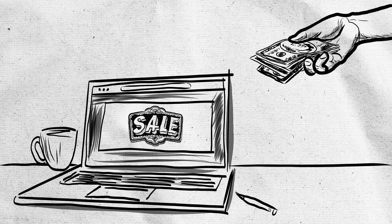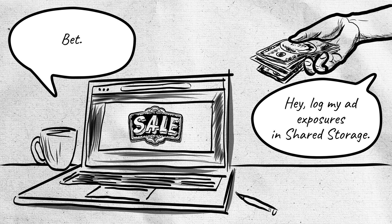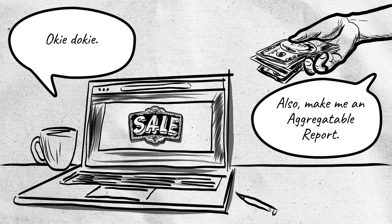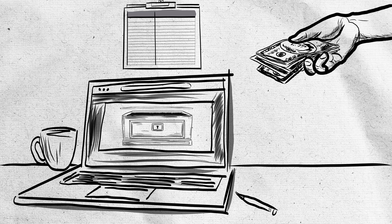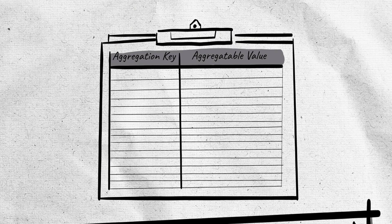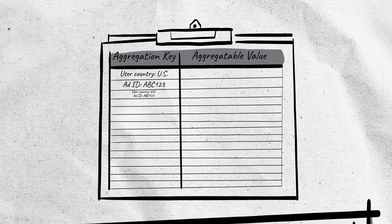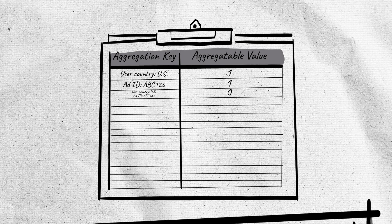An ad is served to a person online and tells the browser to log this exposure in Shared Storage and make an aggregatable report using the Private Aggregation API. The aggregatable report has two main pieces of information: the aggregation key and the aggregatable value. The aggregation key is the collection of information the advertiser wants the browser to jot down — for example, the browser's country-level location and the ID of the ad that was served. The aggregatable value is the number corresponding to a person fitting the aggregation key criteria.